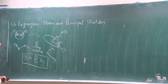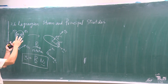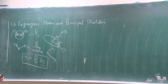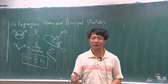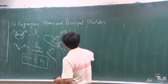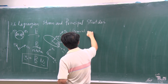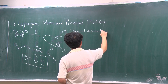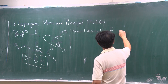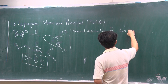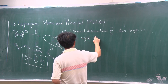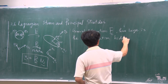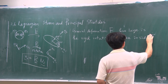This is the rotation matrix. In general, we have a general deformation matrix F. Given a general deformation, how large is the rigid body rotation hidden inside?